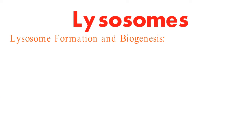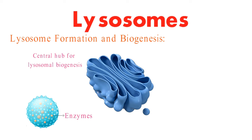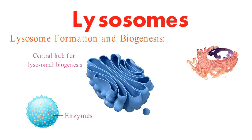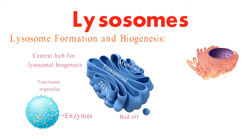Moving on to the formation of lysosomes. Imagine the Golgi apparatus as a central hub for lysosomal biogenesis. Enzymes destined for lysosomes are synthesized in the endoplasmic reticulum, modified in the Golgi apparatus, and transported to lysosomes. Lysosomes then bud off from the Golgi's trans network, maturing into functional organelles with an acidic pH and proteolytic activity.